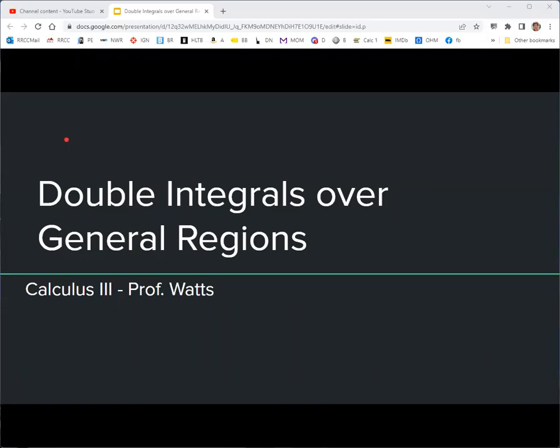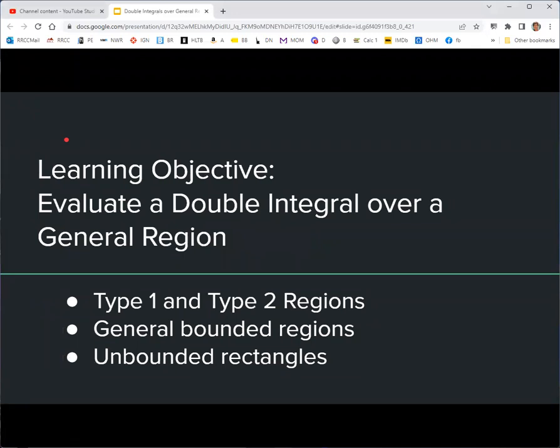In this video, we're going to see how to do double integrals over general regions. This video corresponds with section 5.2 of the OpenStax textbook Calculus Volume 3. We're going to need to look at what are called type 1 and type 2 regions, and then from there we can go to general bounded regions. For rectangles, we can even go unbounded.